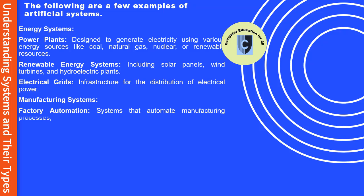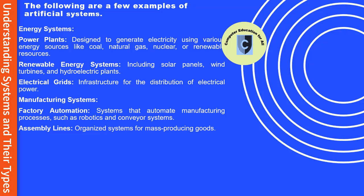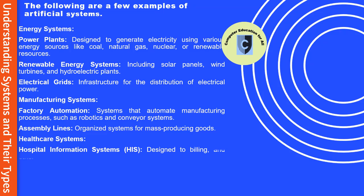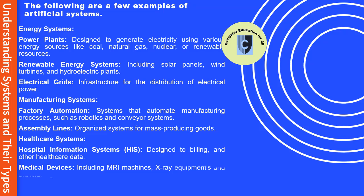Manufacturing systems include factory automation systems that automate manufacturing processes such as robotics and conveyor systems, and assembly lines — organized systems for mass-producing goods. Healthcare systems include hospital information systems designed to manage billing and other healthcare data, and medical devices including MRI machines, x-ray equipment, and artificial organs.